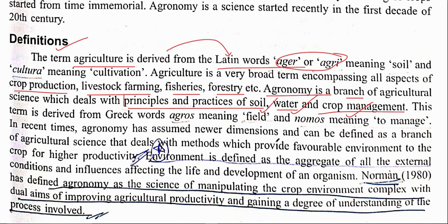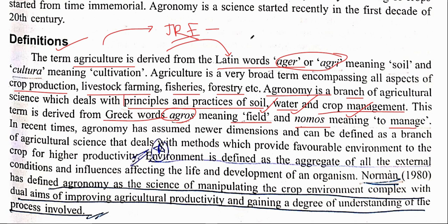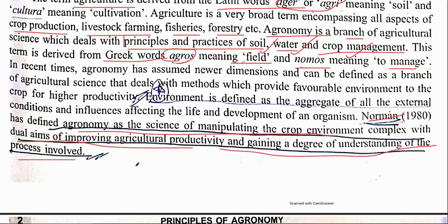Agronomy is derived from the Greek word agros, meaning field, and nomos, meaning to manage. This is important because it was recently asked in JRF 2019 — from which word is agronomy derived, Latin or Greek. So you must remember: agriculture is from Latin, agronomy is from Greek. Norman's definition of agronomy — agronomy is the science of manipulating the crop-environment complex with the dual aim of improving agricultural productivity — is less likely to be examined.